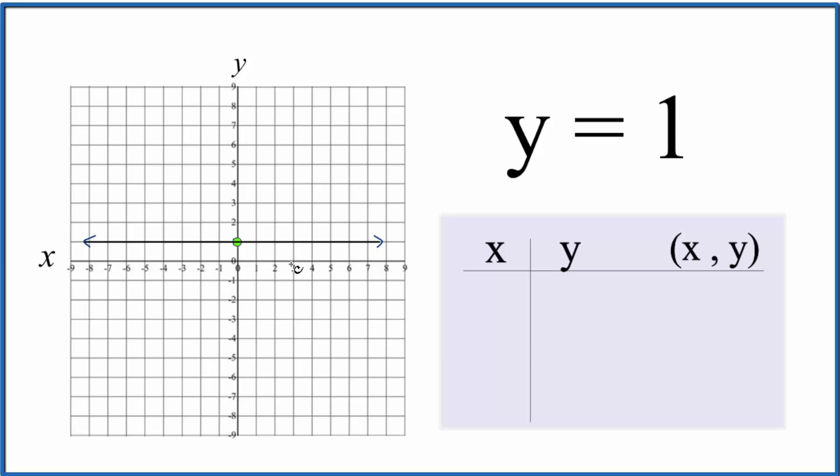So if we had x is 3, y is going to be 1. If we had x is -6, y is going to be 1. So our y-intercept is 1, and the slope for this horizontal line is going to be 0.